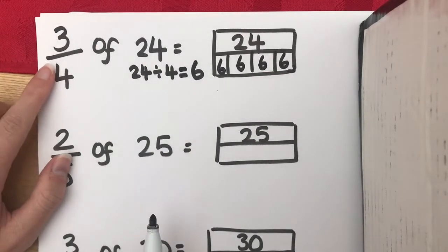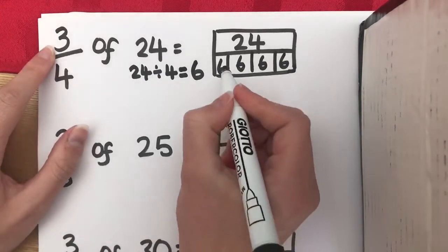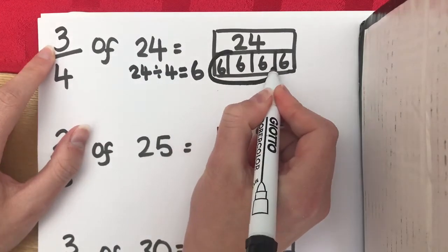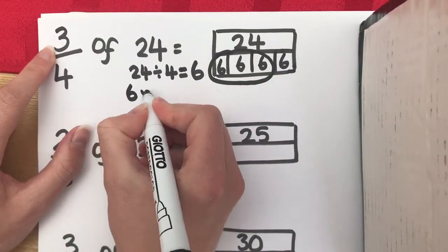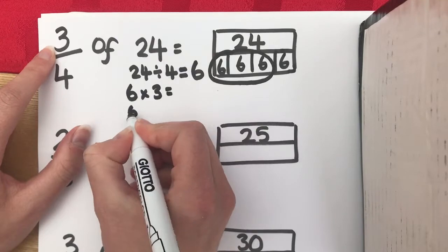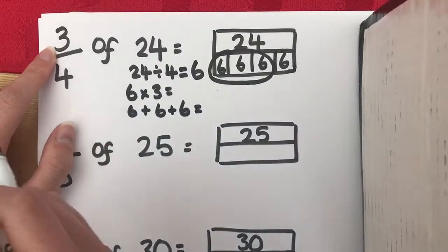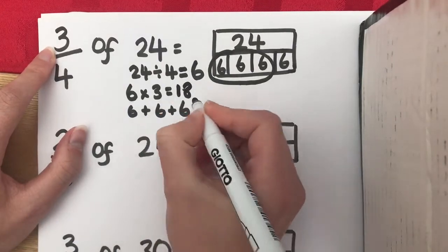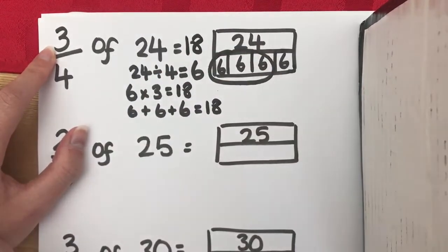Now, if we look back at the original question, we didn't want 1 quarter, we wanted 3 quarters. So, just like we did in class, we're going to circle the numerator, 3 of them, and we want either 6 times 3 or 6 add 6 add 6. Either gives us exactly the same answer. And you should know that that is 18. So, 3 quarters of 24 equals 18.